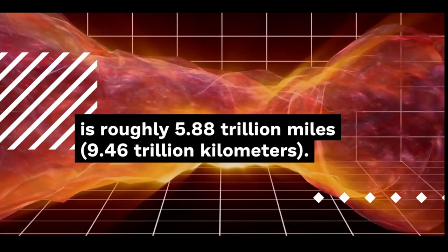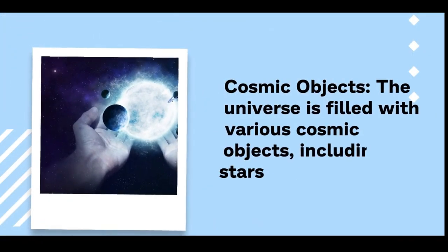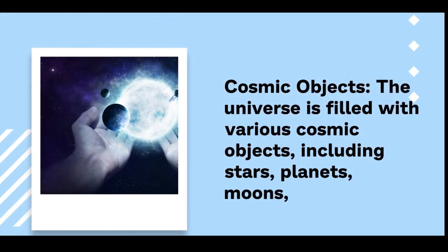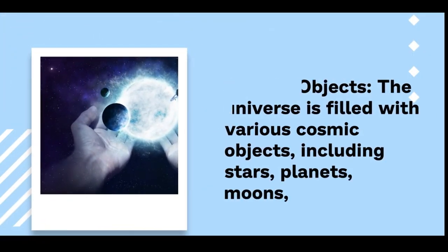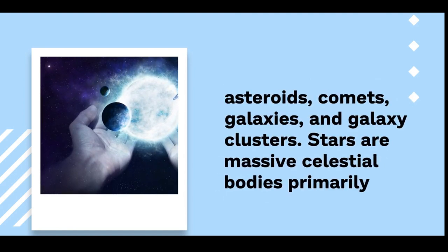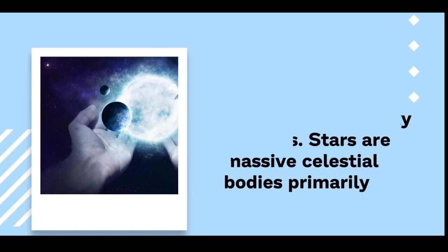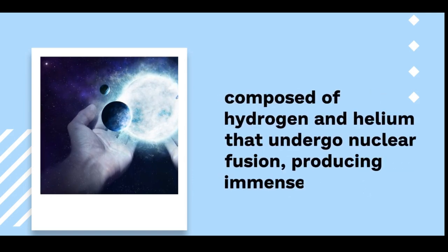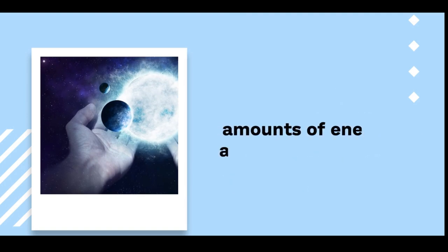Cosmic Objects. The universe is populated by an array of celestial objects, including stars, planets, moons, asteroids, comets, galaxies, and galaxy clusters. Stars are immense celestial bodies primarily composed of hydrogen and helium, undergoing nuclear fusion to produce light and energy.